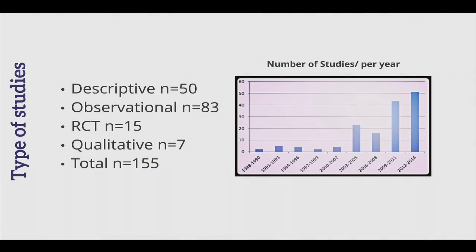If you see the progression from 2012 to 2014, and it's only January and February 2014-2015, we have more than 50 papers. In terms of the type of studies, we decided to include papers, abstracts, and even descriptions, because the idea was first to map what is out there. We found 50 descriptive studies, 83 observational studies, 15 randomized controlled trials, and qualitative research — so in total, we had 155 papers.